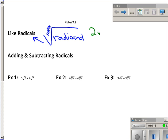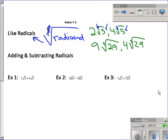For example, I have 2√5 and 4√5. Those are like radicals because they have the same index. In this case, we're getting the square root of both of them, and they have the same radicand. In this case, 5 is the only thing inside. Similarly, 9∛29 and 4∛29 are like radicals because they have the same index and the same radicand.